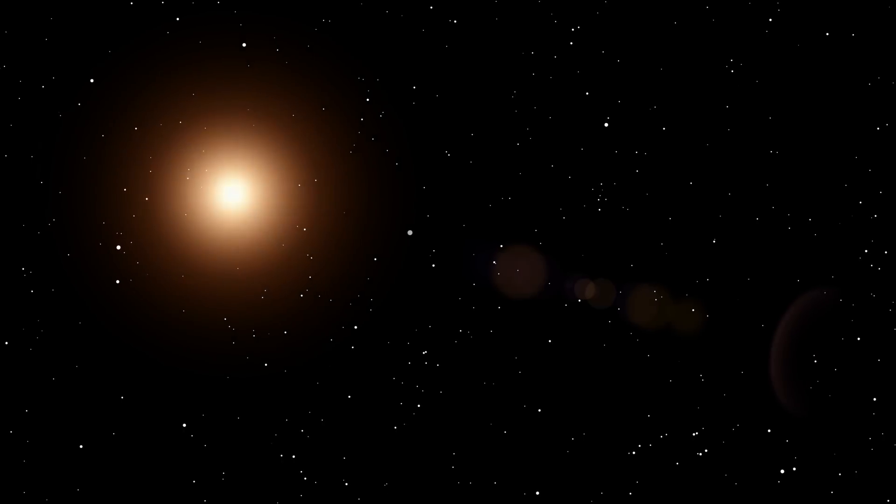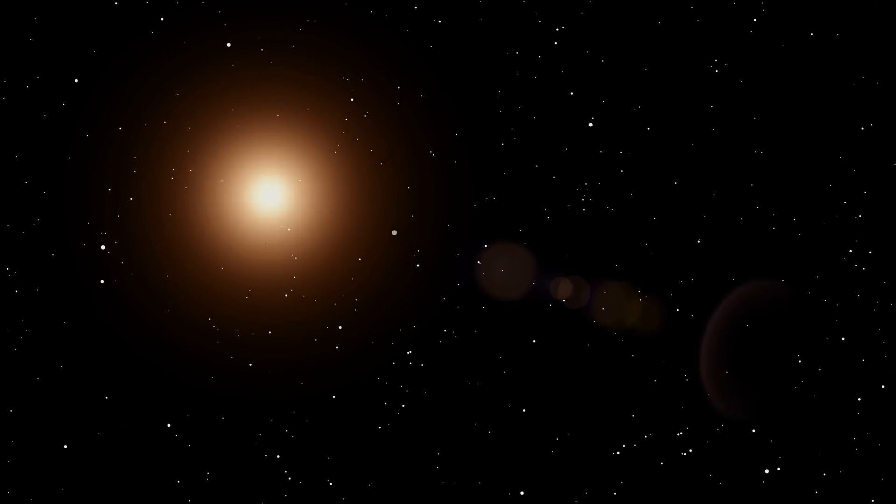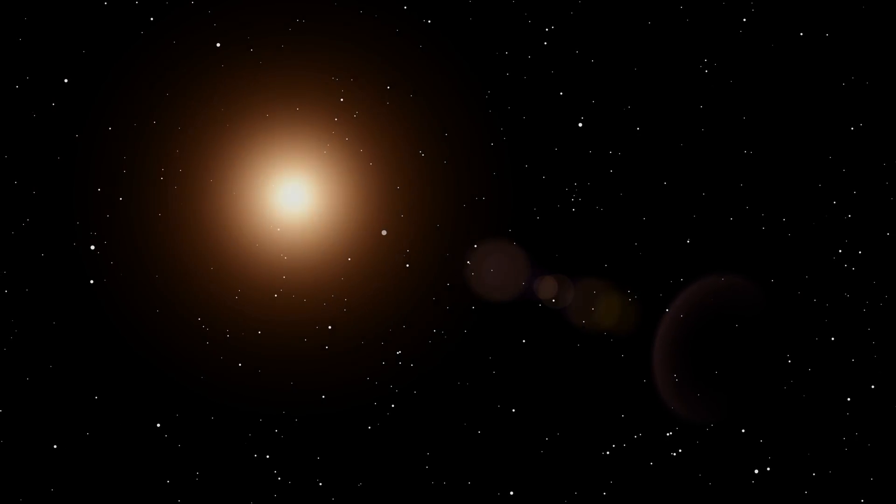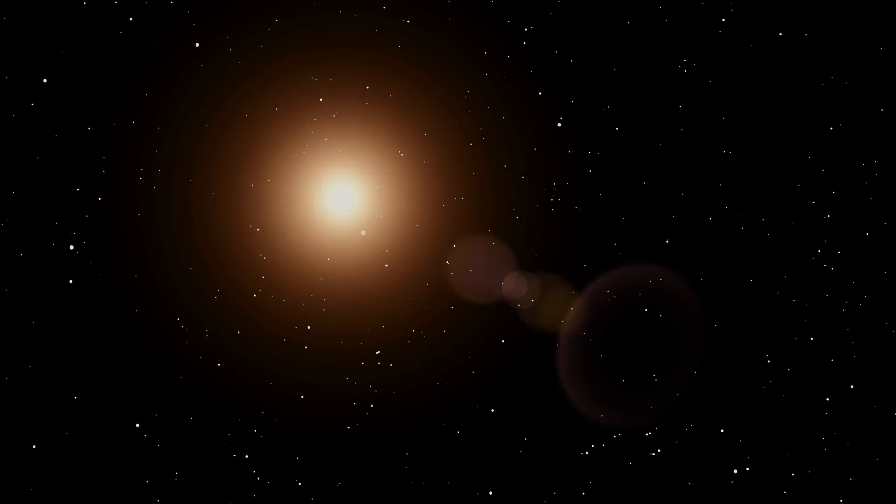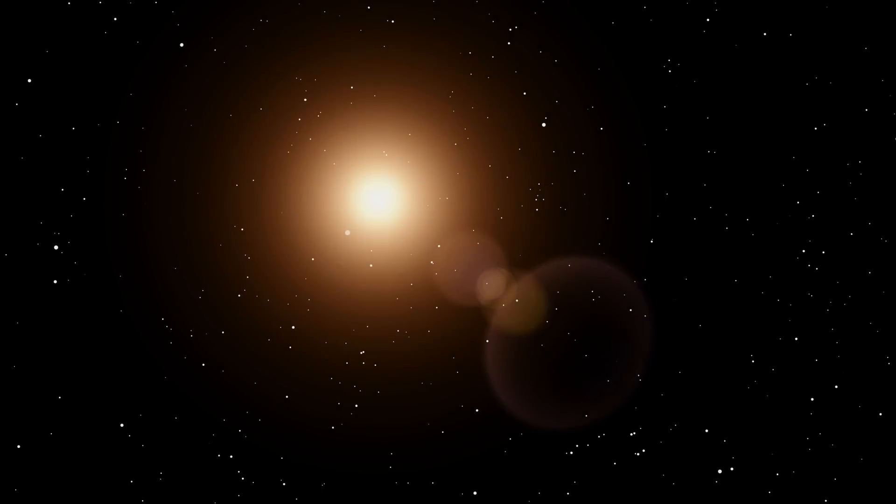Before this happened, Betelgeuse had a regular pattern of getting dimmer and brighter over a 400-day cycle. But that cycle has disappeared, at least we thought so for a while. So what's going on now? What has changed?